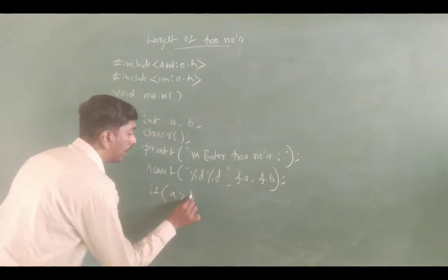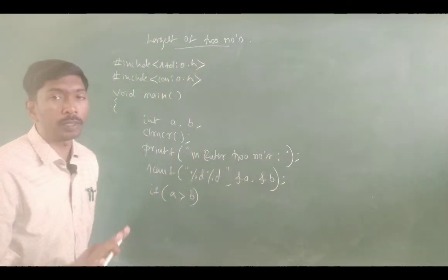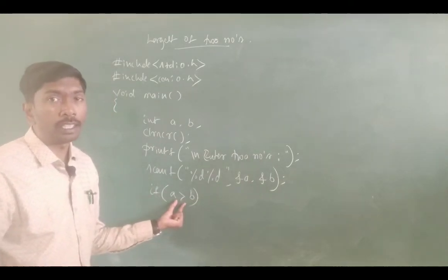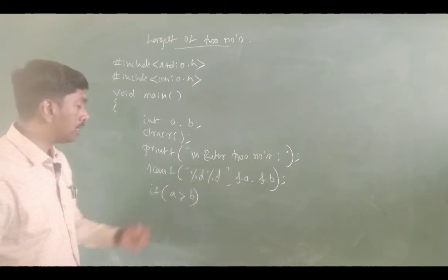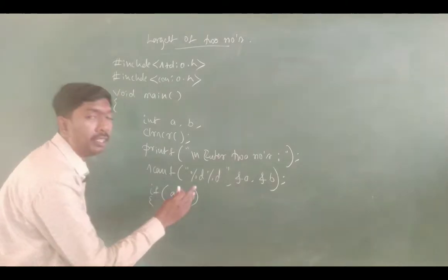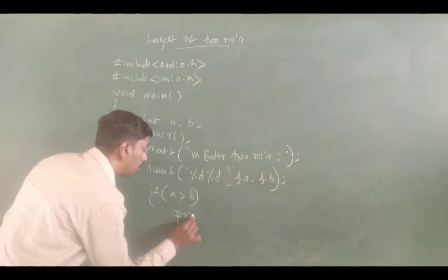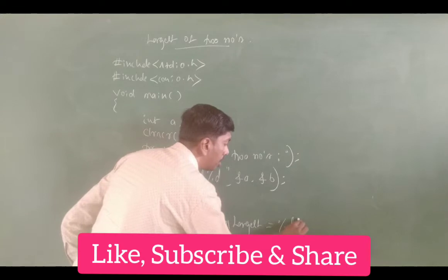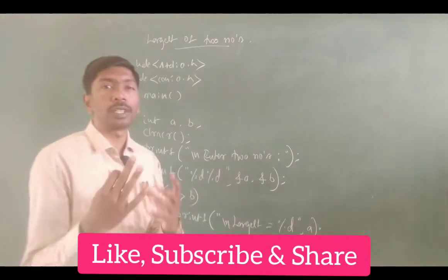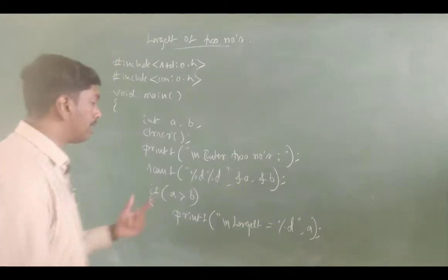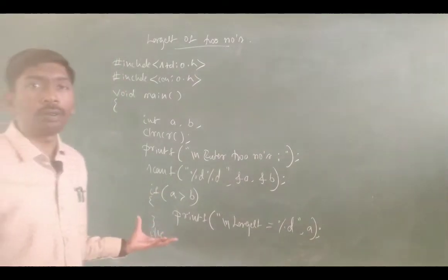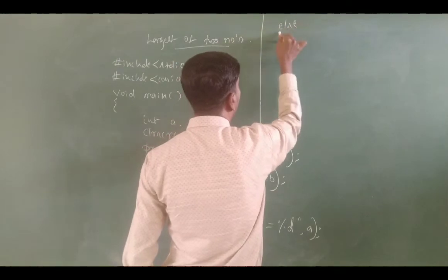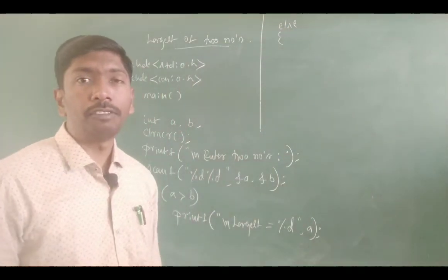If A is greater than B — this is the largest of two numbers. We read A and B, then check: if A is greater than B, then we print printf newline 'Largest = %d', A. By chance if the condition is false — else block — then by default B is the largest.